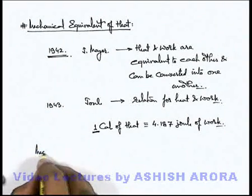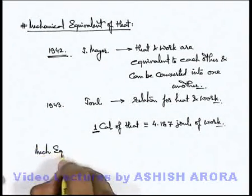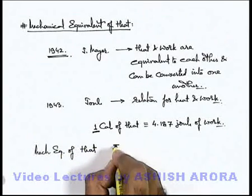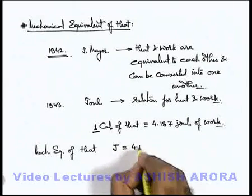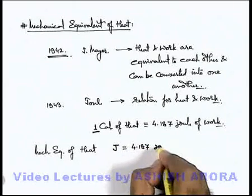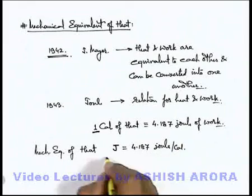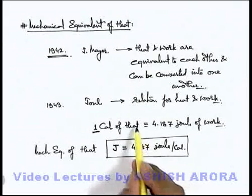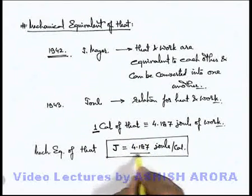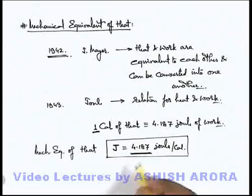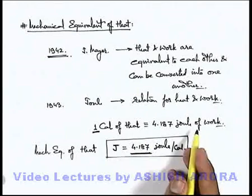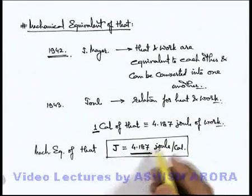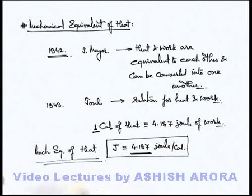Based on this, the parameter termed mechanical equivalent of heat was established. It is denoted by symbol J and its value is given as 4.187 joules per calorie. This is quite an important relation. Whenever heat is transformed to work, this conversion factor is used, and conversely for transformation of work to heat.